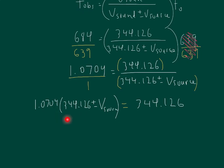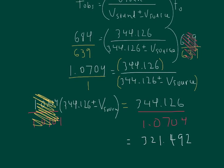Now I need to expand the bracket, or the other thing I can do is just divide both sides by 1.0704. They will cancel off on the left hand side, and on the right hand side 344.126 divided by 1.0704 gives me 321.4929. On the left hand side I still have 344.126, and I still have this plus or minus V source.